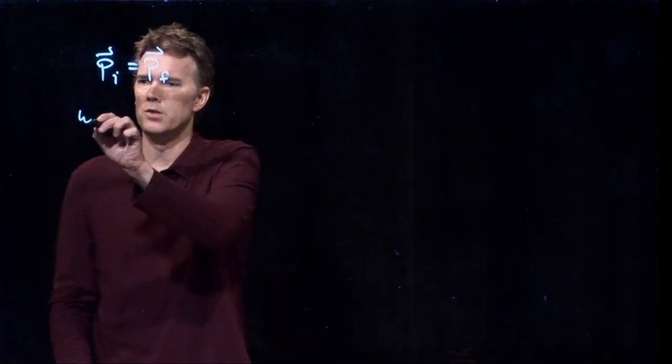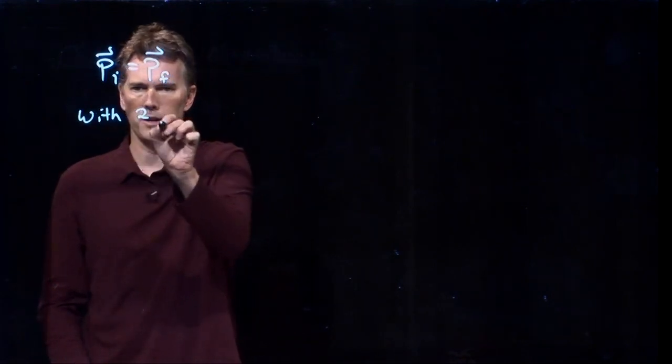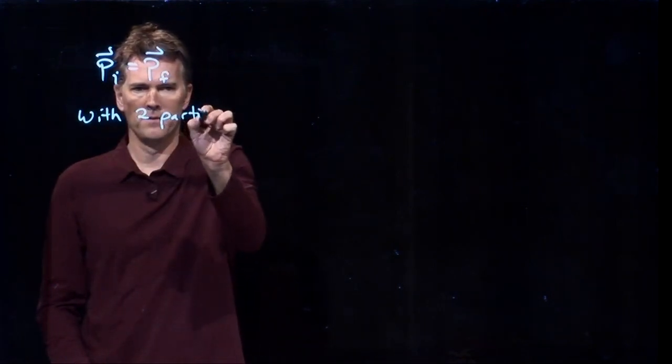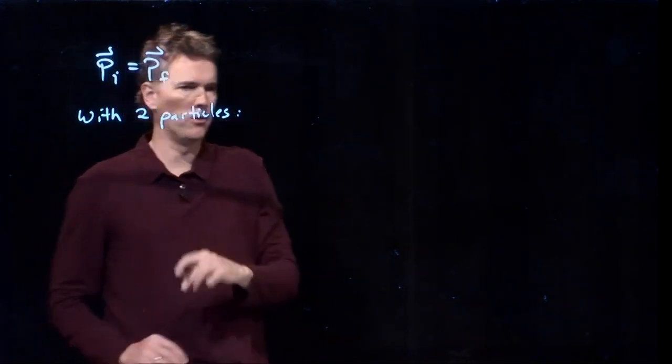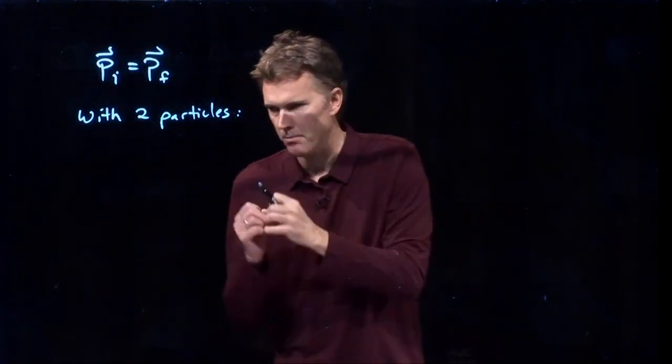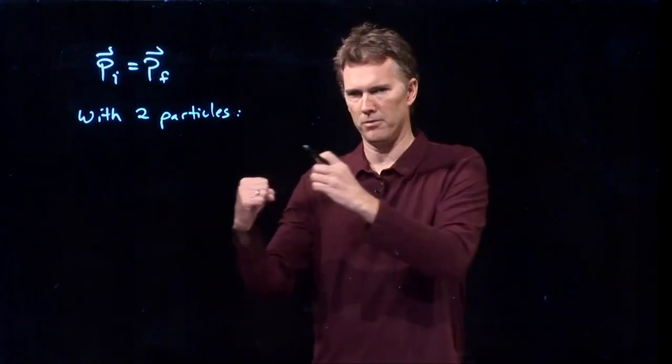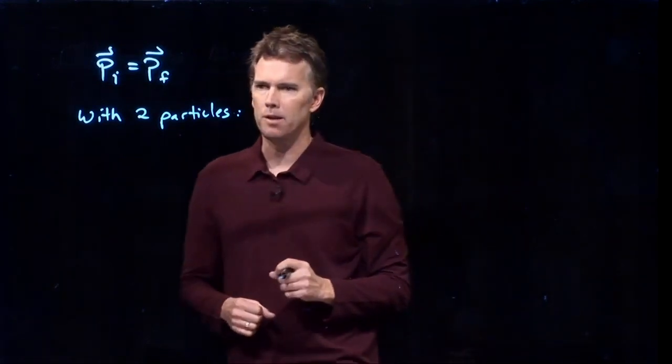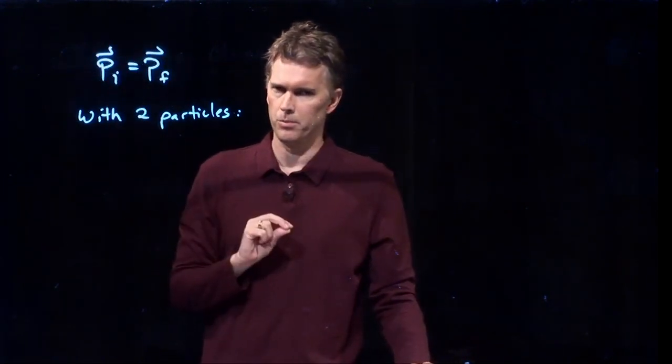Let's say that we have two particles that are going to collide and they're going to interact somehow. Maybe they collide, maybe they explode, maybe they just have some forces that are acting on each other. How do I describe what we just said here in terms of these two particles?